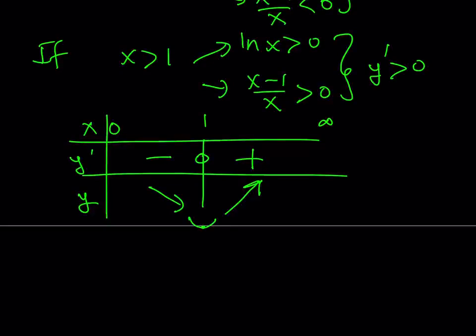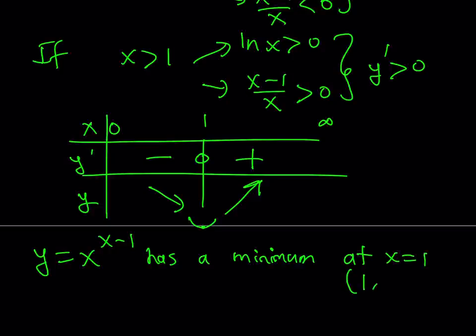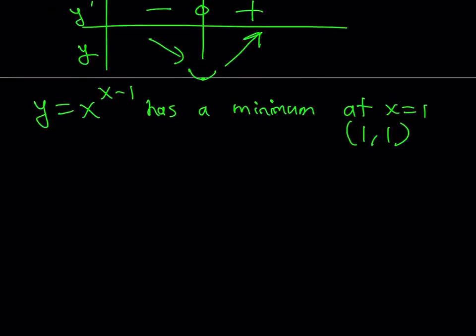which indicates that our function is decreasing and then increasing, which means that we have a minimum at x equals 1. So our function y equals x to the power x minus 1 has a minimum at x equals 1. And to be more specific, that point is 1, 1. At 1, 1, our function has a minimum. So it's kind of like this. The function goes down and then goes up, and this is 1,1, which is where the function makes a minimum point.